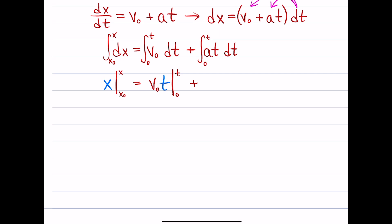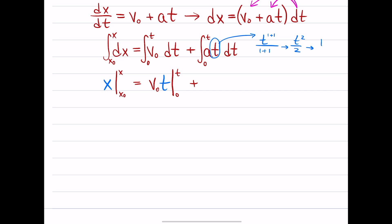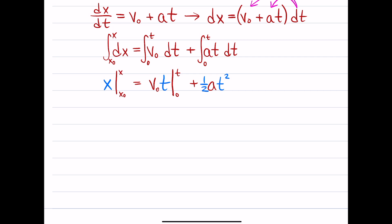For the second term on the right, we have something special: this t is a t to the first power. Adding 1 to that 1 gives t to the second power, and we divide by the new total power of 1 plus 1. That gives us t² over 2, which can also be written as one-half t squared. So we have the original a, and then one-half t squared — written as one-half a t², which is the traditional order.